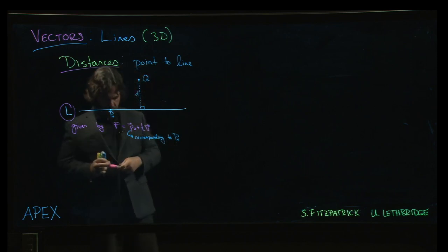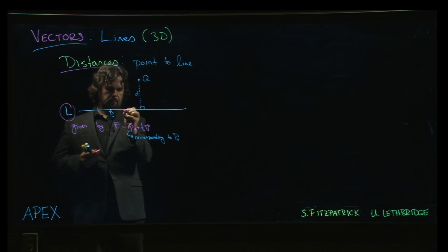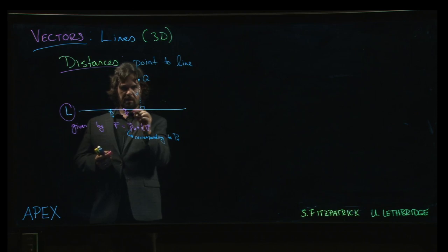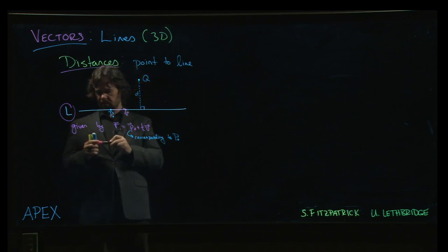And the vector V is in the direction of the line. I don't know how long V is relative to the distance from there to there, because I don't know where that point is going to end up on the line.